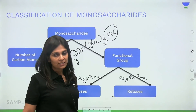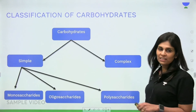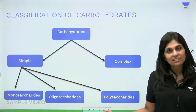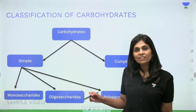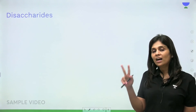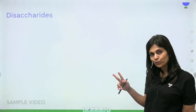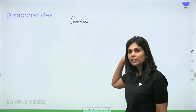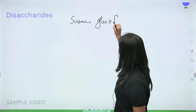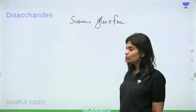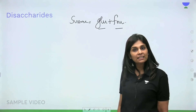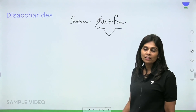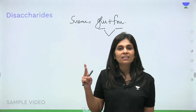Now let's discuss oligosaccharides. One important type of oligosaccharide is disaccharides. For the commonly asked five disaccharides, you need to know two facts: first, the individual sugars present in the disaccharide — for example, sucrose is made up of glucose and fructose; second, the linkage that connects those two sugars. If you know these two facts for each disaccharide, you will know everything related to them.